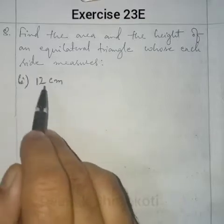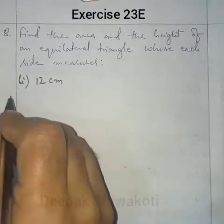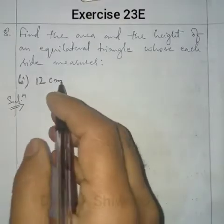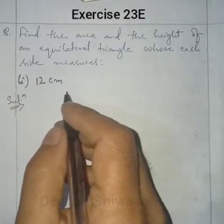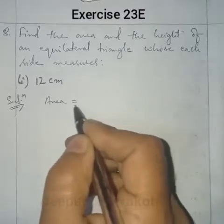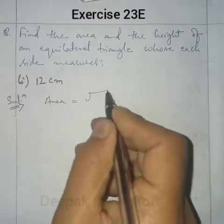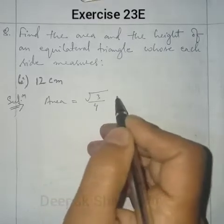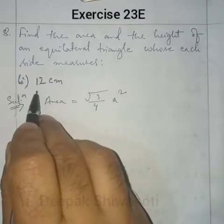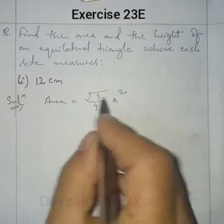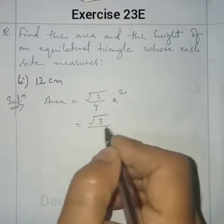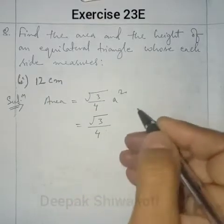The side is given as 12 cm. The formula to find the area of an equilateral triangle is: Area = (√3 / 4) × a², where a is the side of the equilateral triangle. In place of a we will write 12. The value of √3 is 1.73.